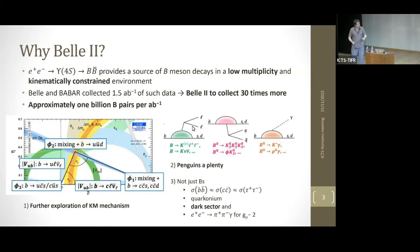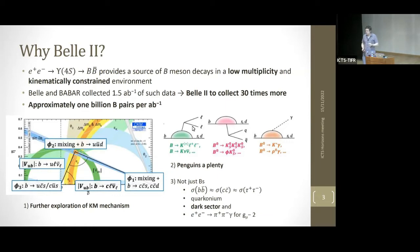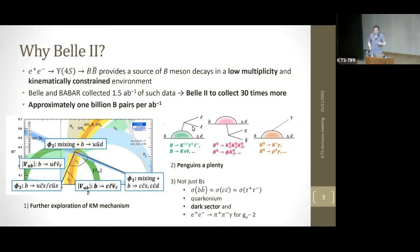Belle II is an experiment that predominantly runs at the center-of-mass energy of the Υ(4S) in e⁺e⁻ collisions, producing BB̄ pairs — so we're primarily a B physics experiment. This environment is just above the threshold for BB̄ production, just over 10 GeV in center-of-mass energy. The B mesons are produced in a low-multiplicity environment with no accompanying particles, and being e⁺e⁻ we have very good kinematic constraints.